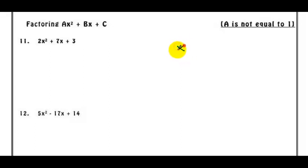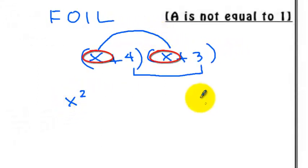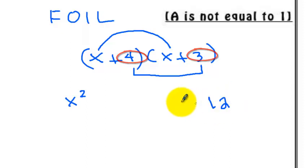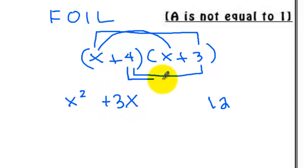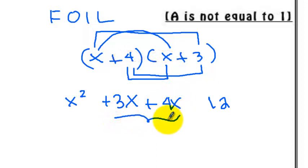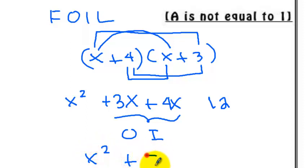So if we have (x + 4)(x + 3), FOIL means we multiply the first term by the first term, which gives x squared. L is to multiply the last term by the last term. In the middle, you get the outer — x times 3, which is positive 3x — and then the inner, which is 4 times x. So your answer here will be x squared plus 7x plus 12.